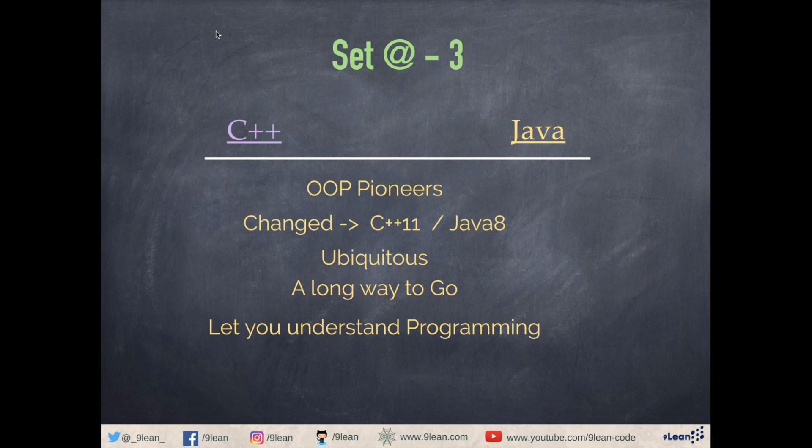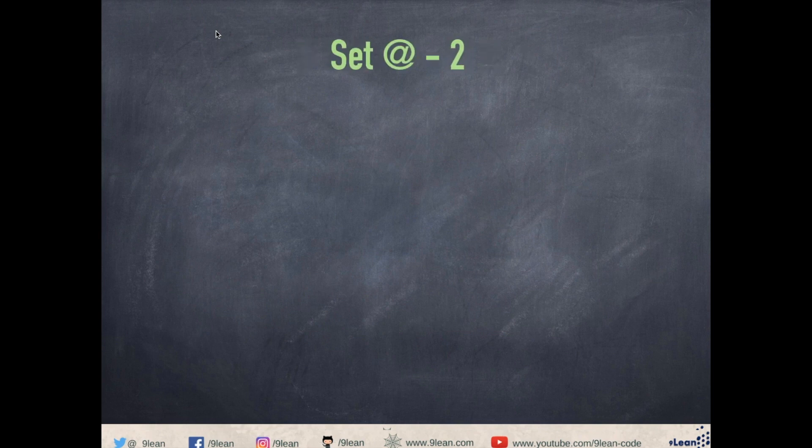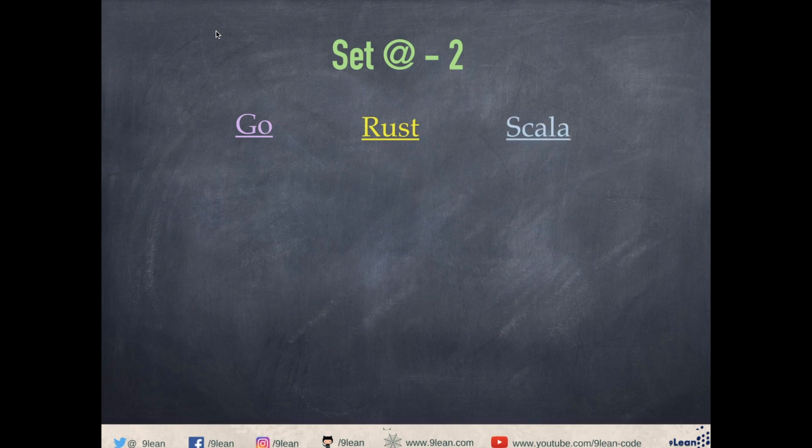Now let's decrement our countdown and move to number two. Number two is shared by three languages: Go, Rust, and Scala. Go by Google, Rust by Mozilla, and Scala.